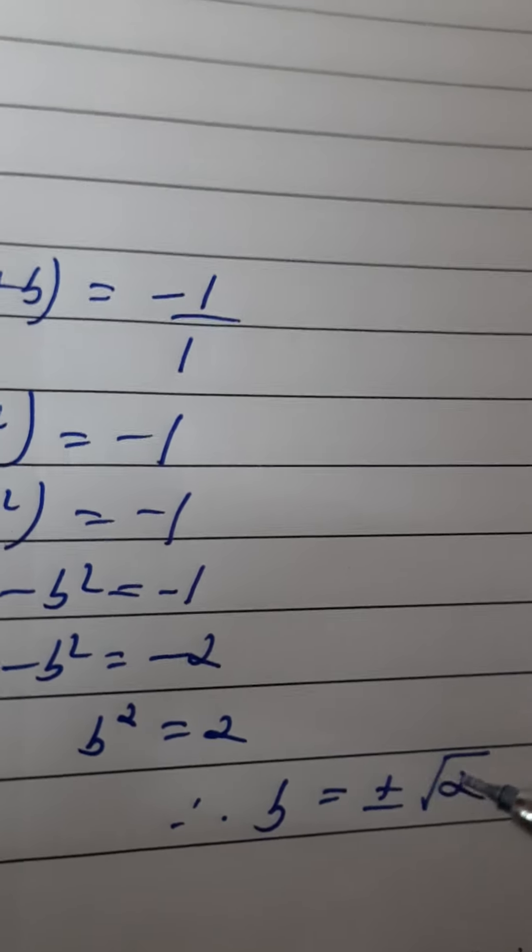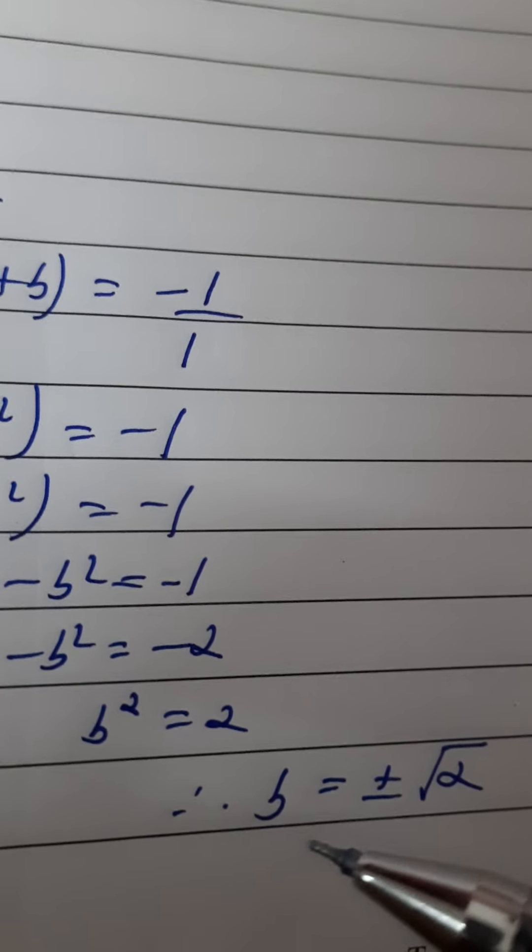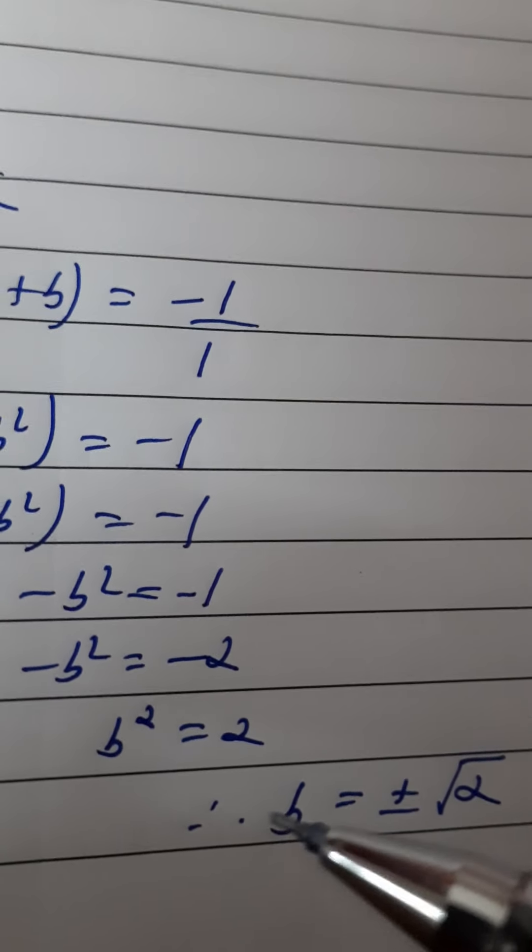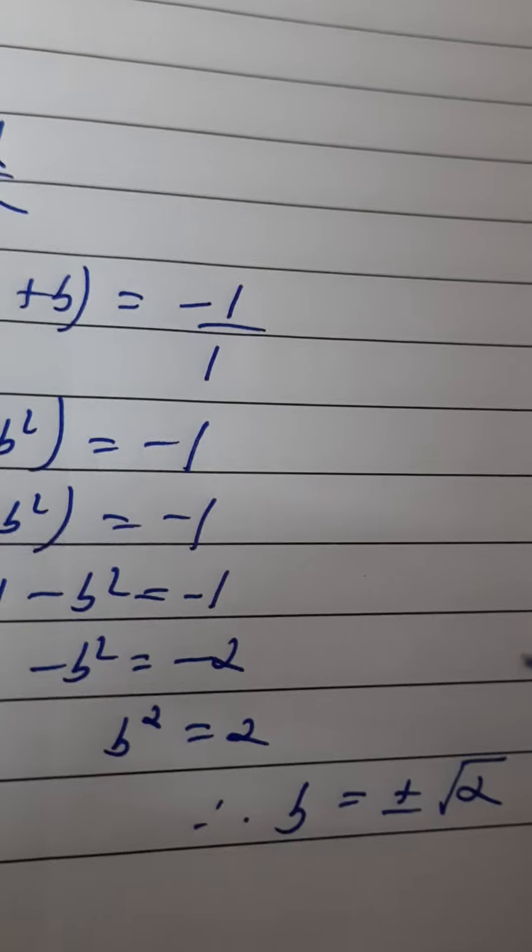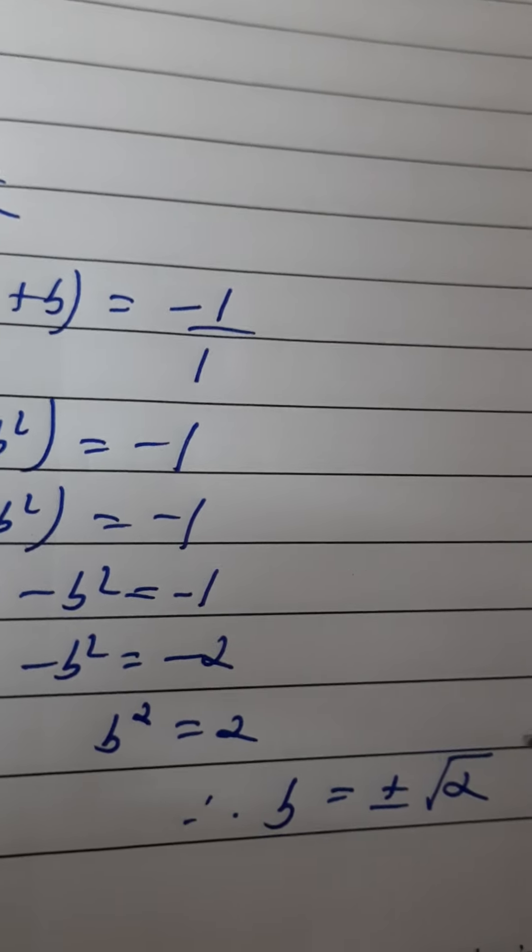Okay, so answer will be plus minus root 2. So in class 9, we never did this plus minus, but remember in class 10, when we find the roots, there is a plus minus case. So root 36, you will not write only 6, you will write plus minus 6, because 6 into 6 is also 36, and minus 6 into minus 6 is also 36.